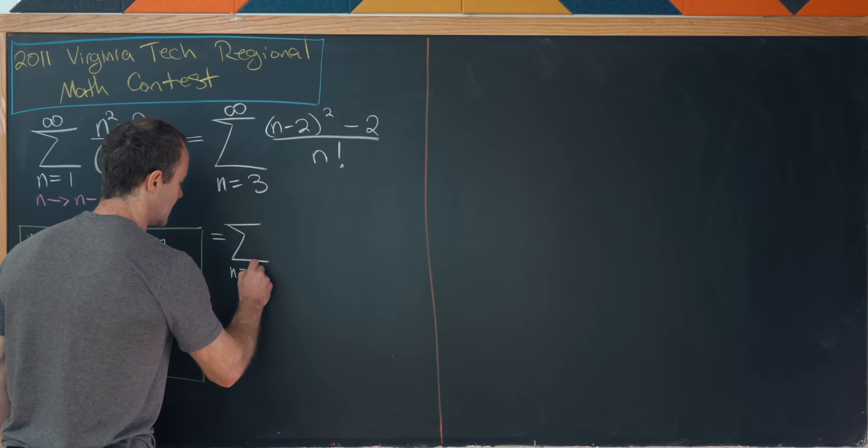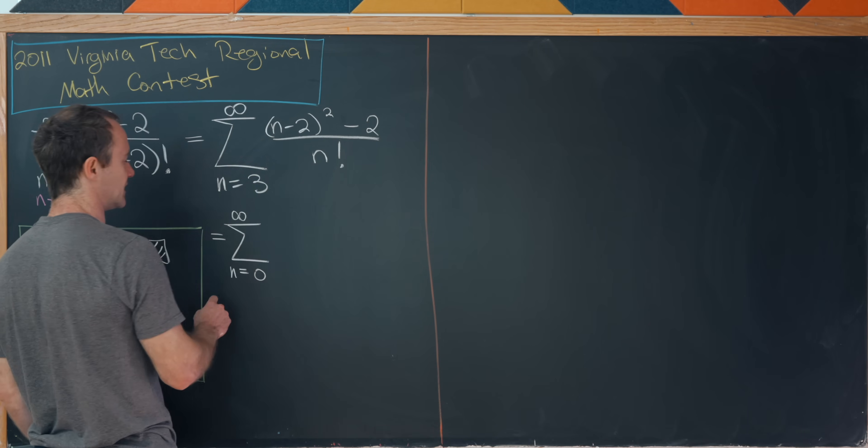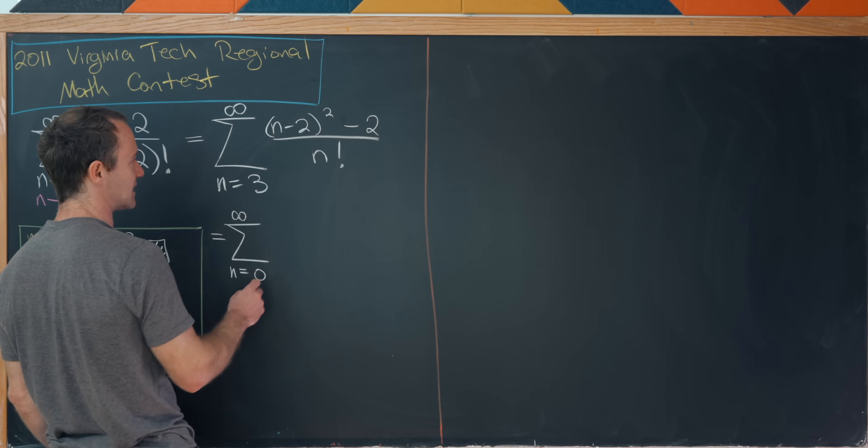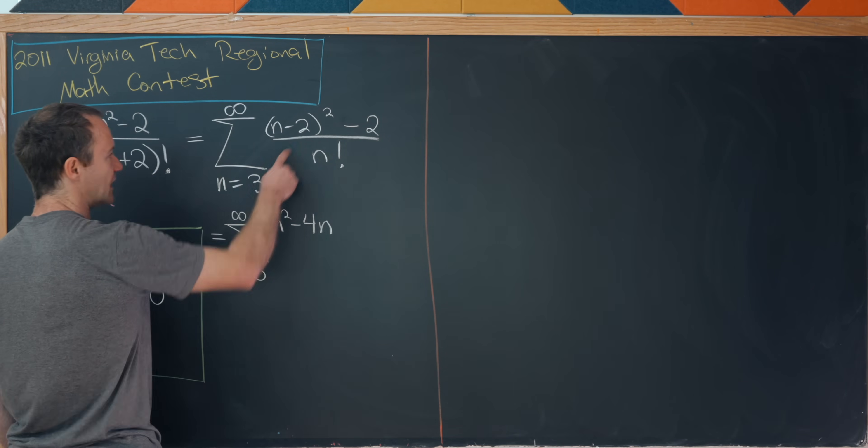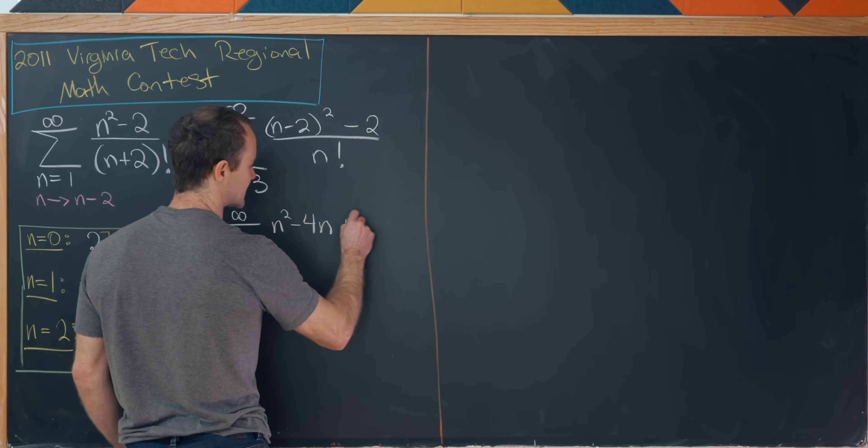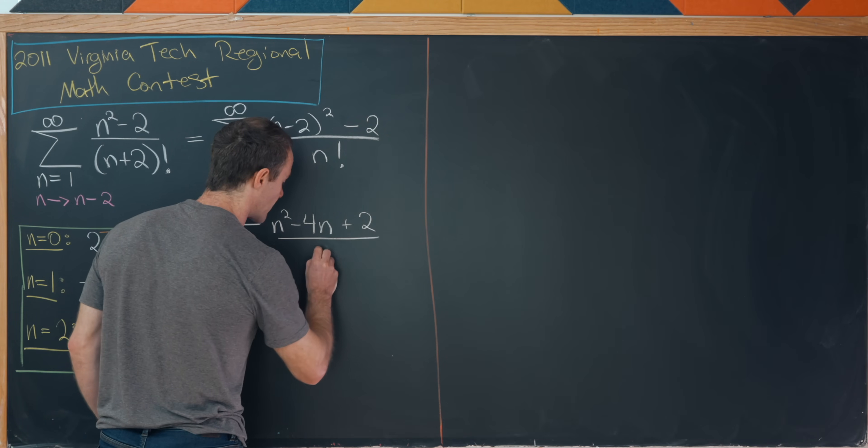So now we'll have the sum n goes from zero to infinity. And now I'm going to go ahead and expand this out. This will be n squared minus four n. And then we'll have plus four minus two. So that's plus two over n factorial.